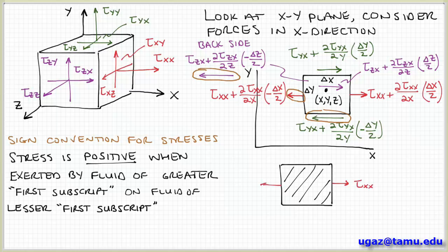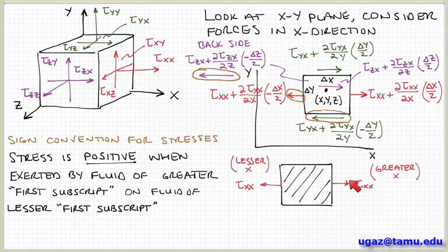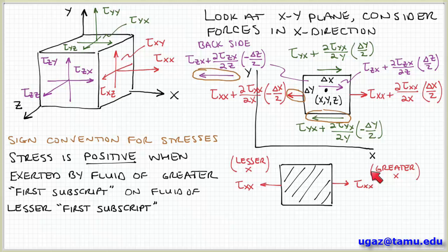Let me show what I'm talking about with a simplified 2D projection of this element. Looking at just the normal components on the x-faces, I have tau xx on the right-hand side and tau xx on the left-hand side. On the right-hand side, the stress on this surface of the control volume is exerted by the fluid out here at a greater value of x — further out in the x-direction than the position of this surface. So this fluid at greater x is acting on a surface of lesser x; by convention, this would be a positive stress.